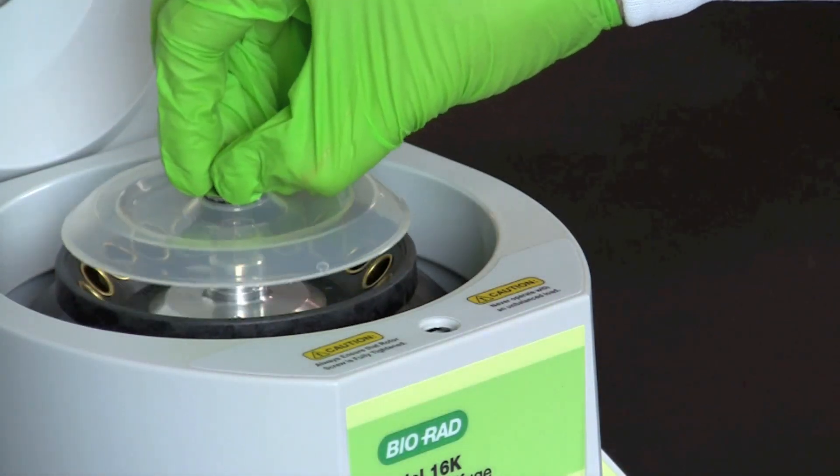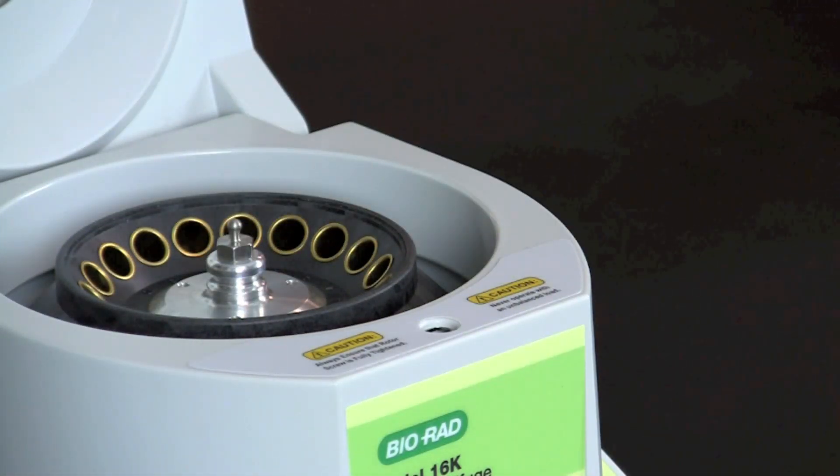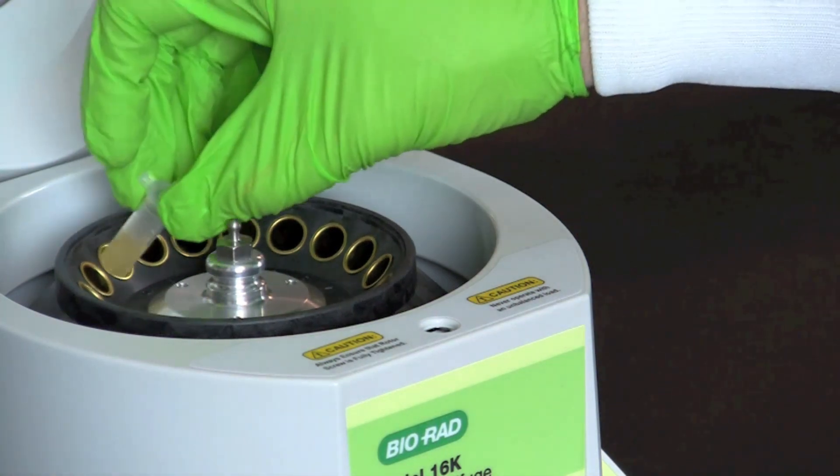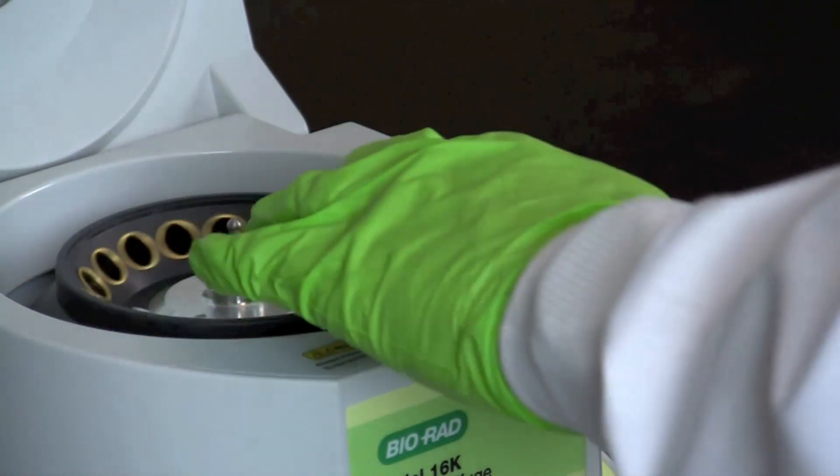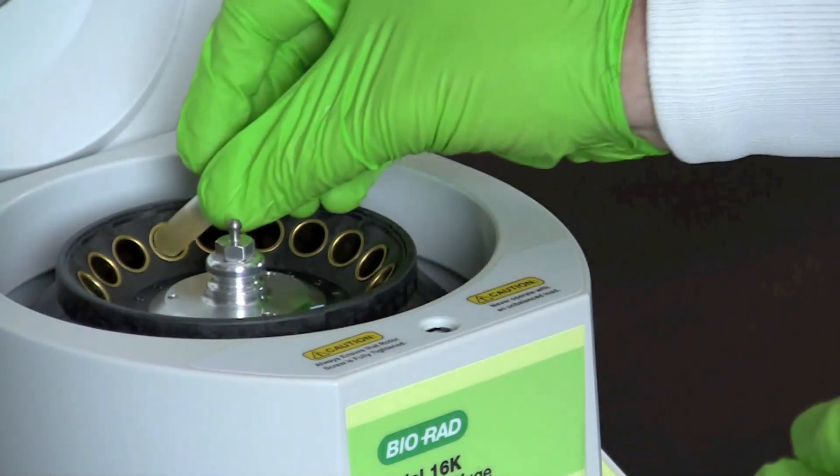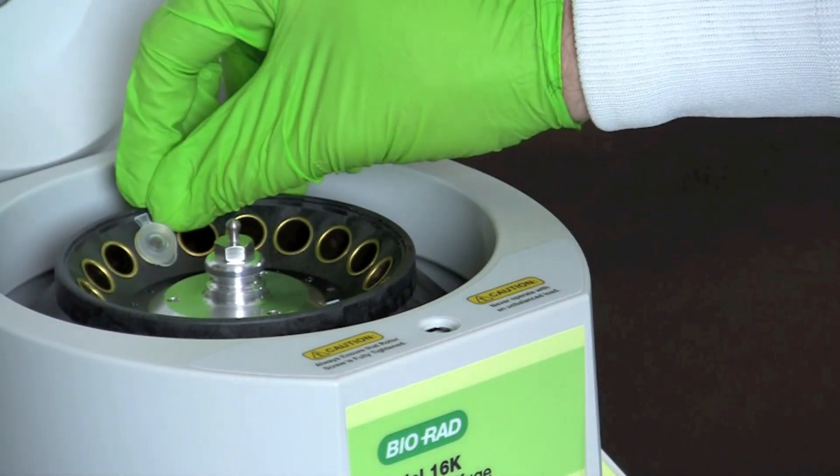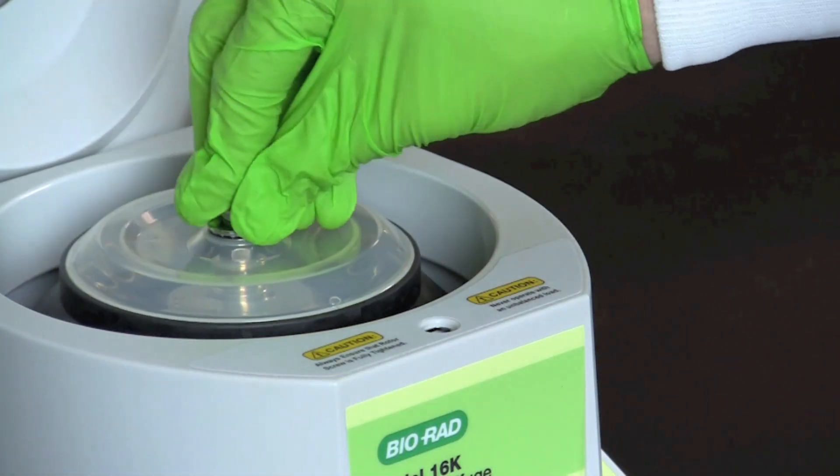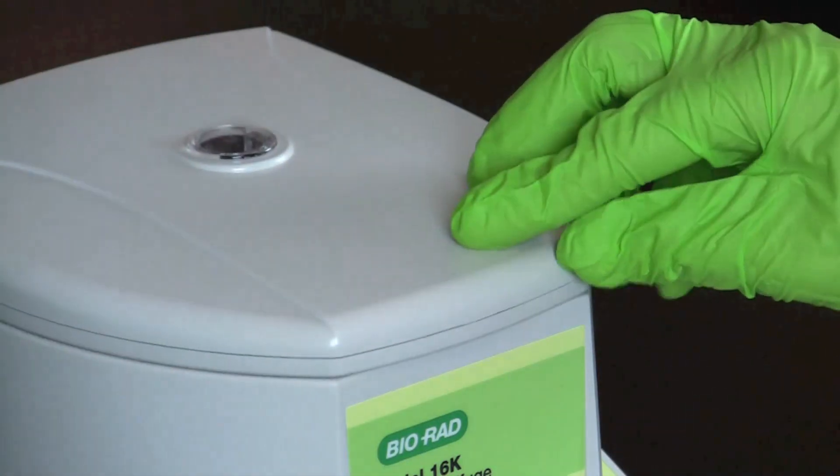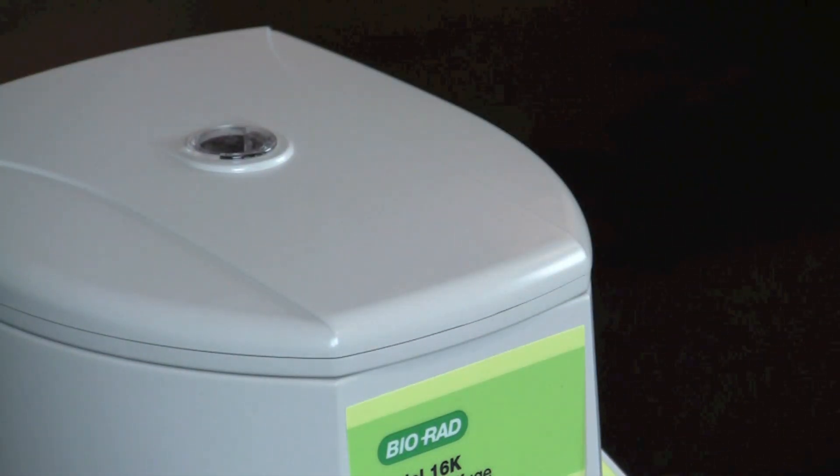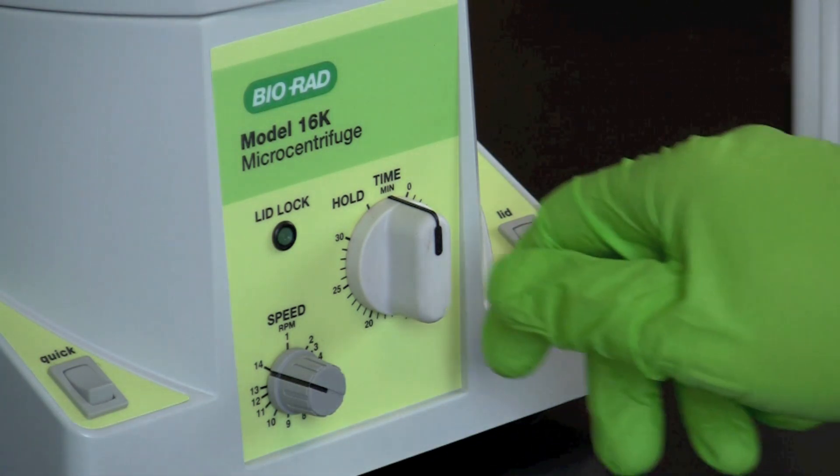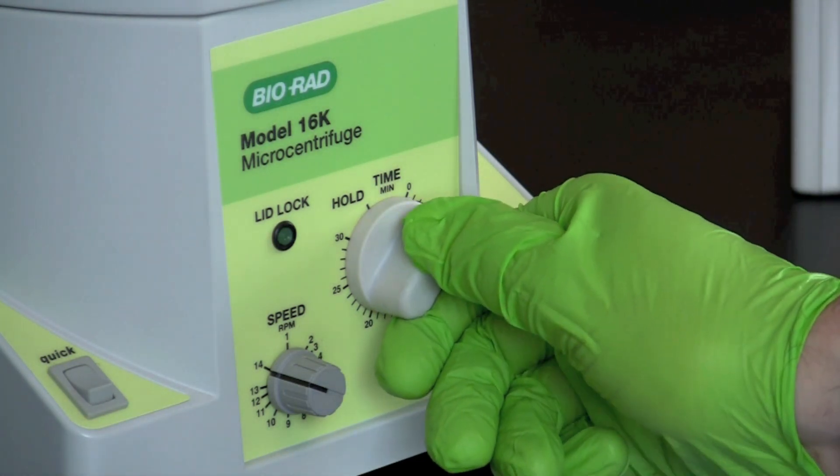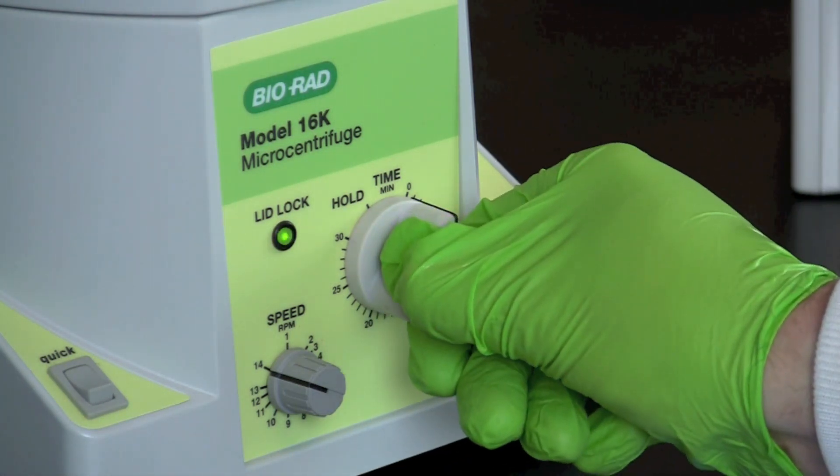Place the tubes in the microcentrifuge in a balanced pattern. Put the hinges of the tubes facing outward so that the pellet will be easy to locate after centrifugation. Centrifuge the tubes containing cultures for one minute at top speed to pellet the bacteria.